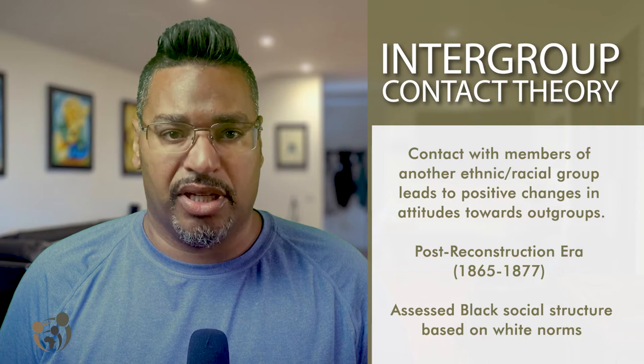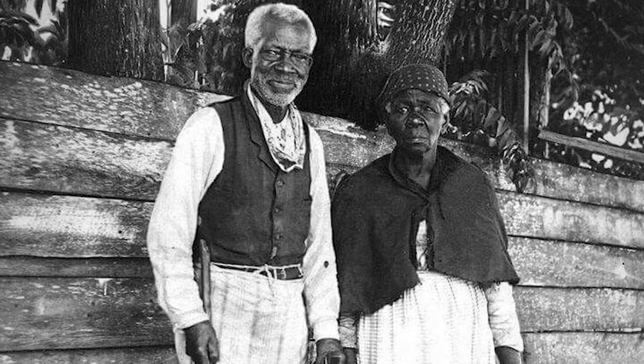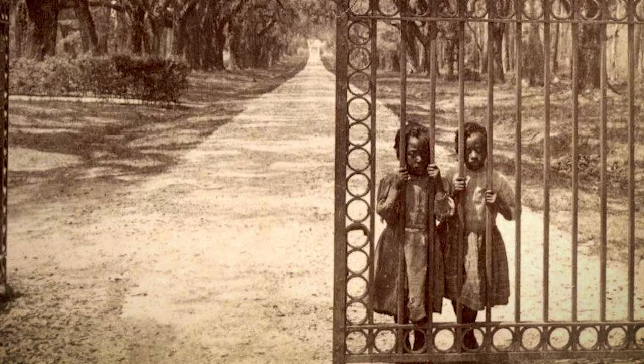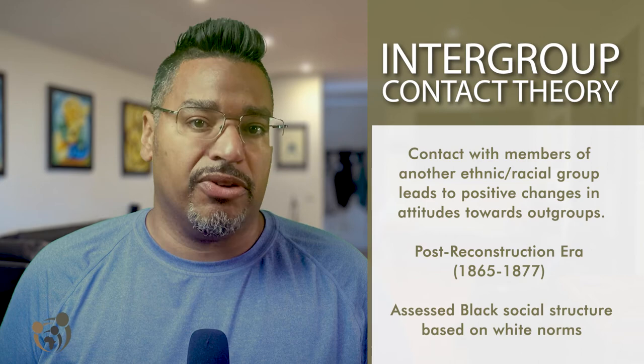Intergroup contact theory suggests that contact with members of another racial group leads to positive changes in attitudes towards marginalized groups. Pioneering Black sociologists sought to understand how African Americans fit into the larger fabric of American life. Emerging in the post-Reconstruction period, these pioneers were motivated by the desire to assess the impact of the rapid changes they experienced during post-Civil War Reconstruction from 1865 to 1887. In the early tradition of Black sociological thought, African Americans were outside the norm in reference to social science research. As a result, the standards for evaluating their cultural and social organization were in comparison to white society, and Black sociologists were largely trapped within that framework.